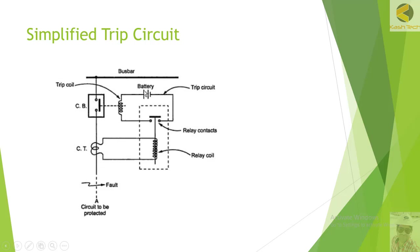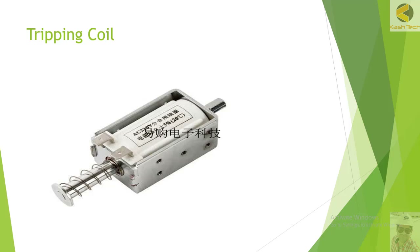These wires are called the trip circuit. This is the DC supply and this is the tripping coil. This is the very basic simplified trip circuit. Later I will show you how a real trip circuit looks in schematics, so you can develop your concepts here and then move to more advanced drawings.